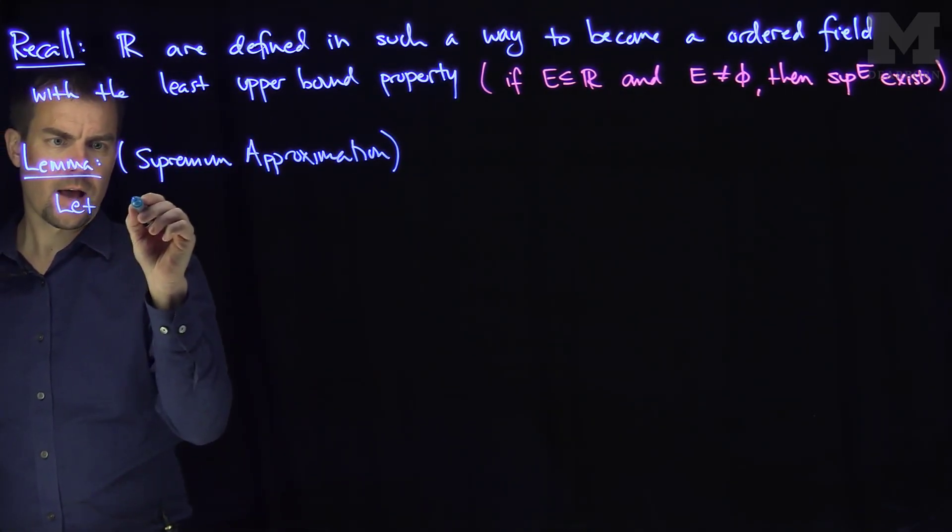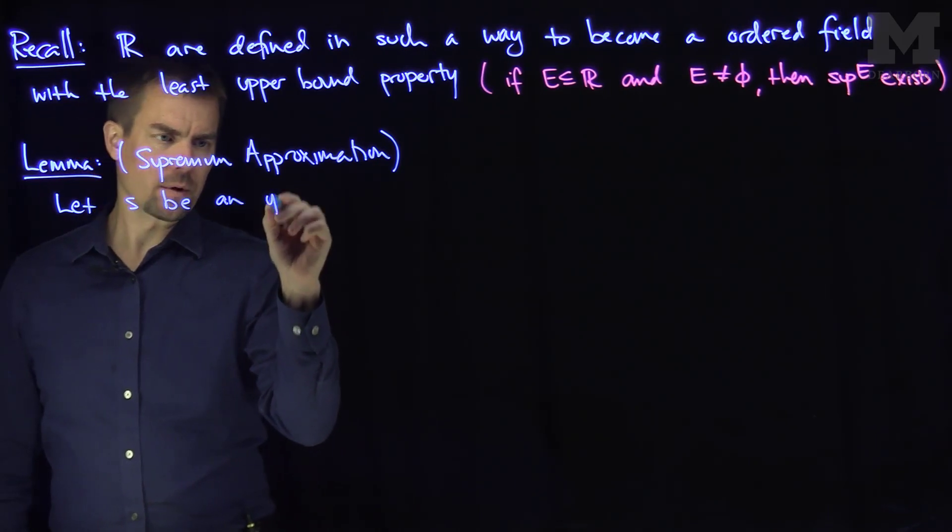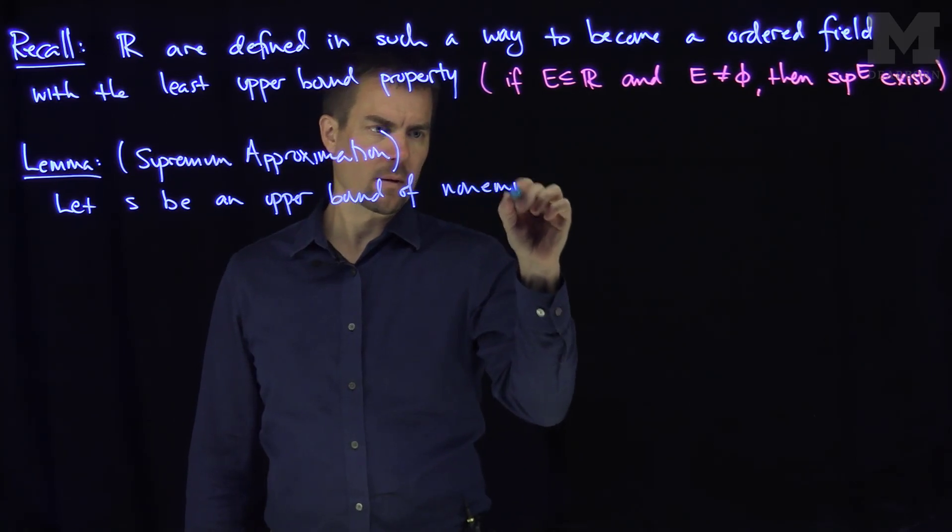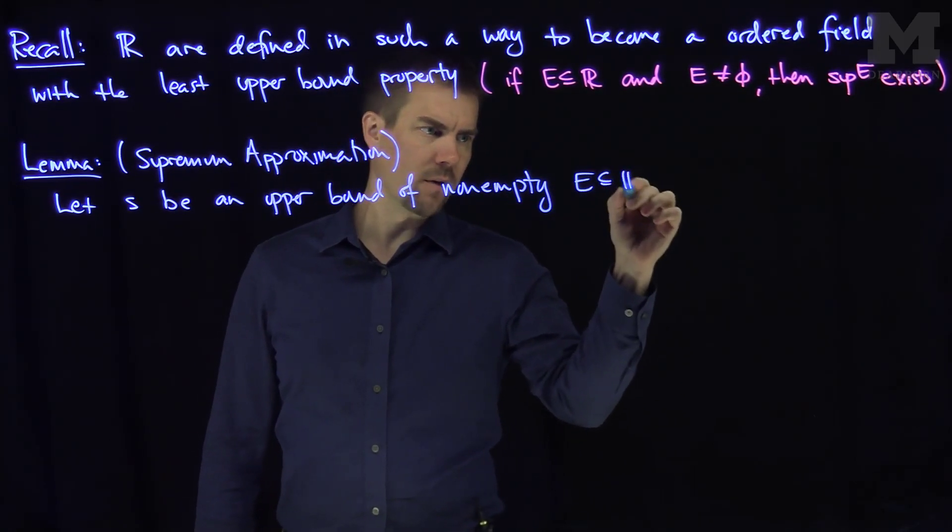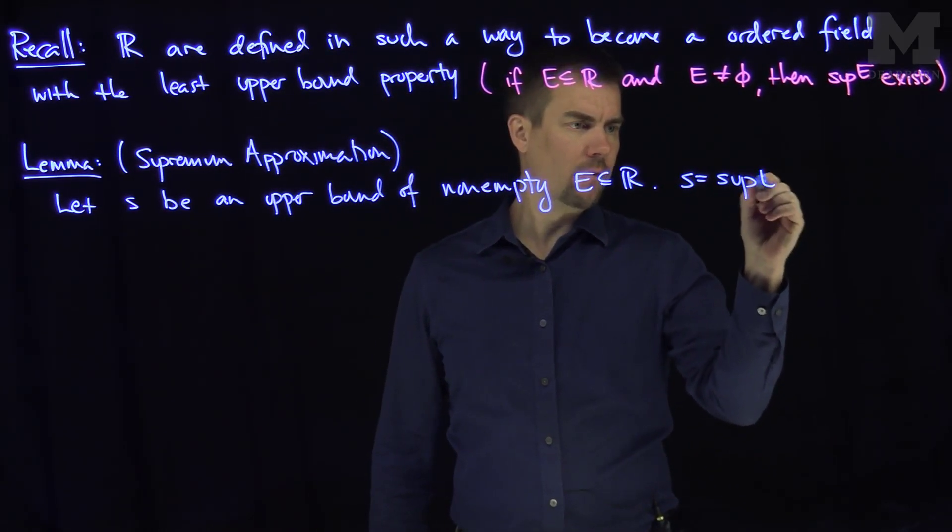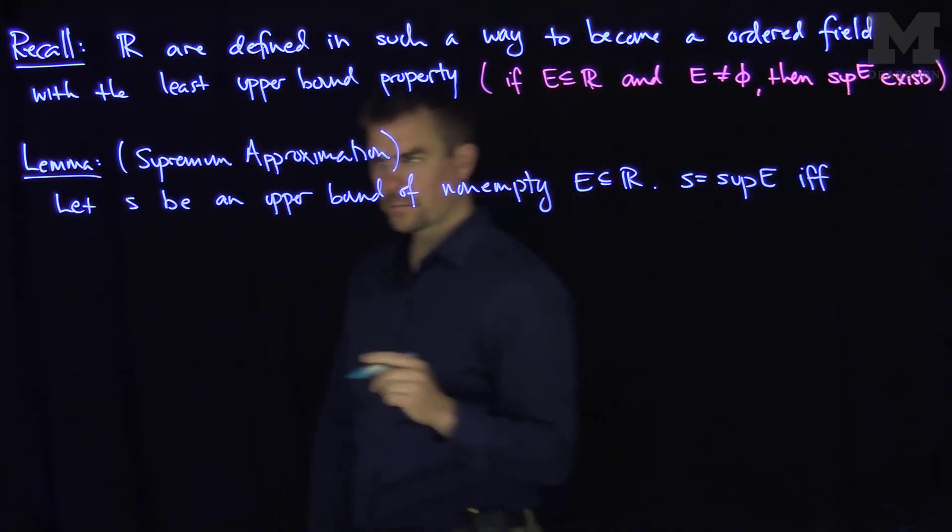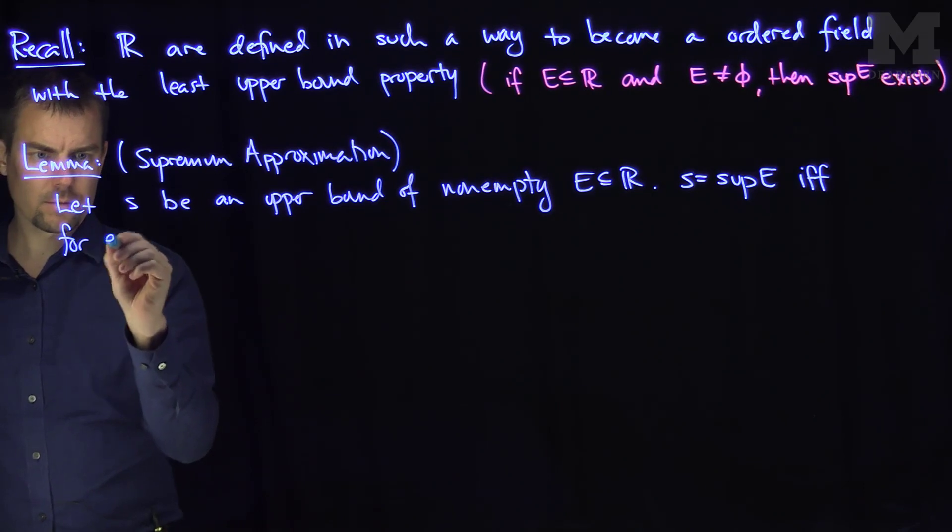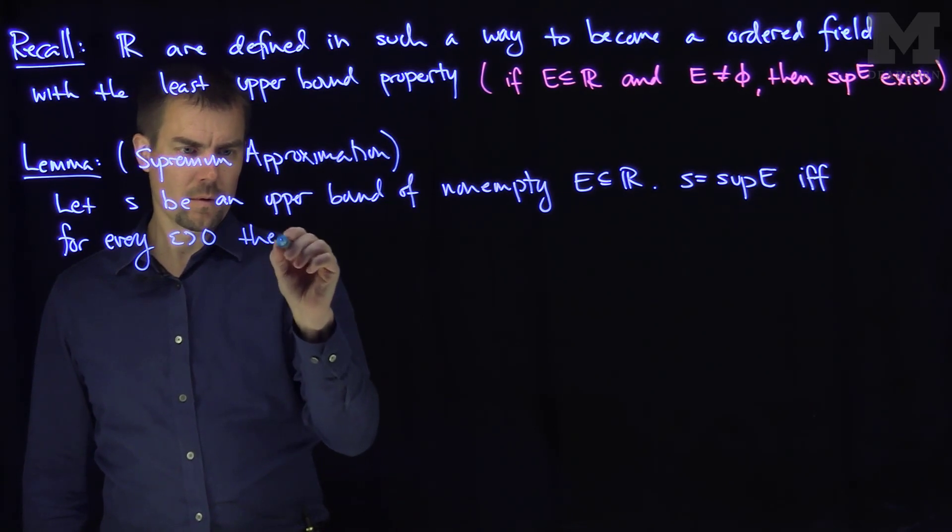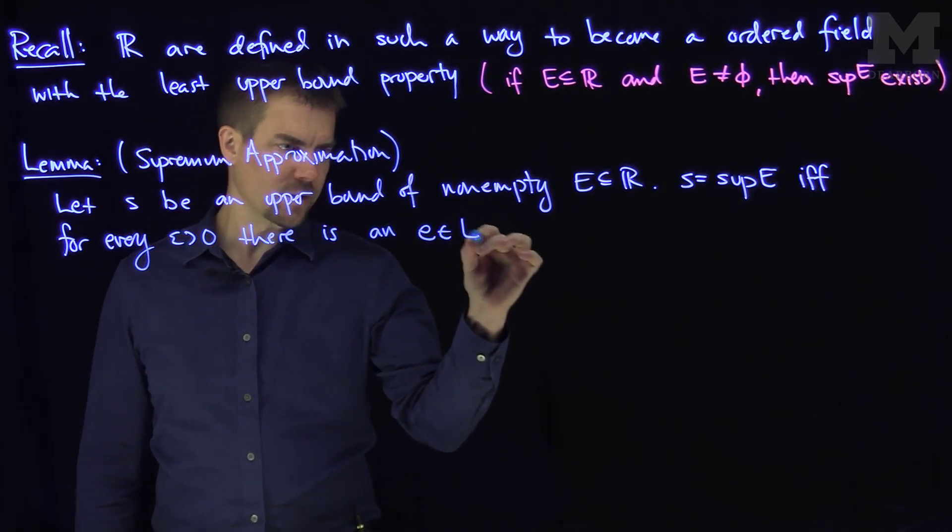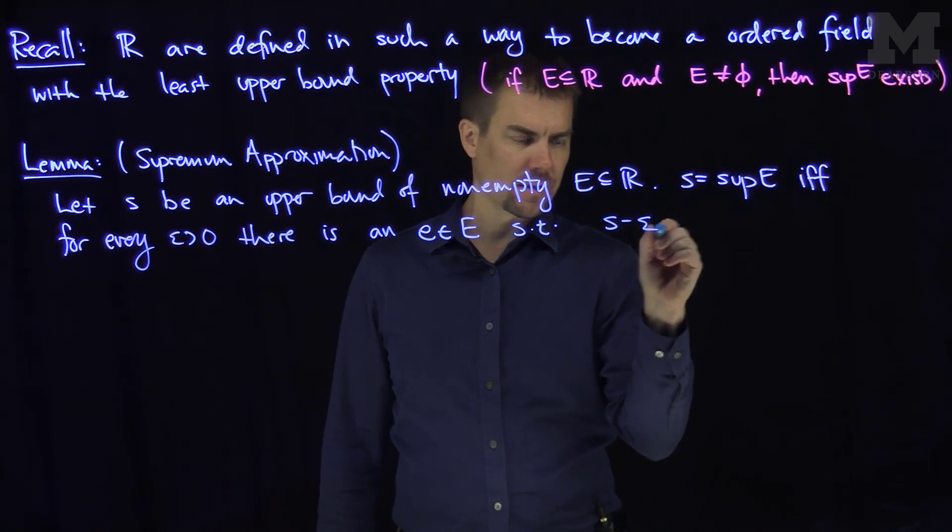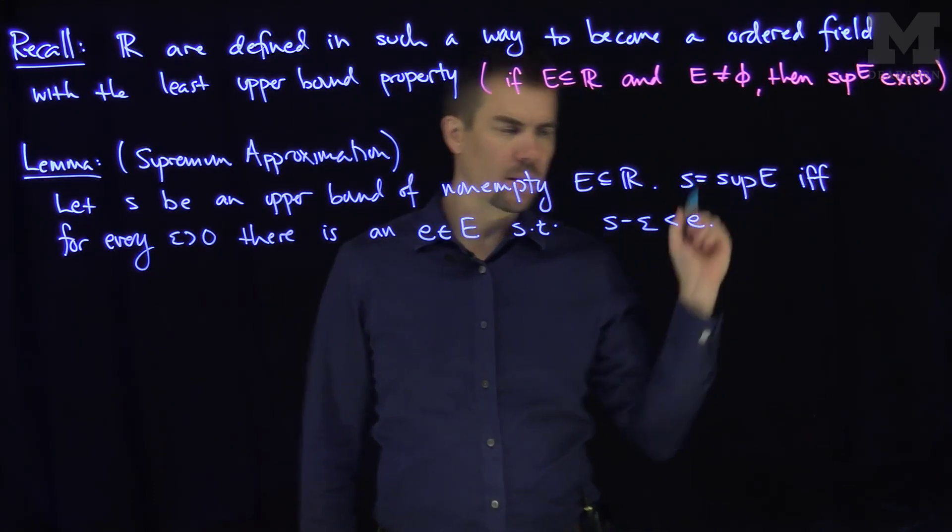It says let S be an upper bound of a non-empty set E, which is a subset of R. Then S is the supremum of E if and only if for every epsilon greater than zero, there is a little e in the set capital E such that S minus epsilon is strictly less than the point e.